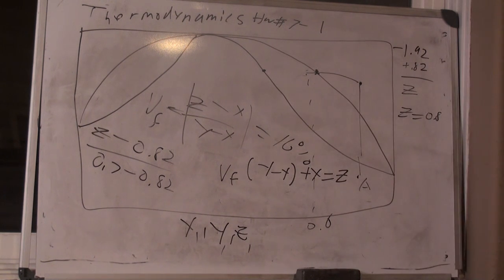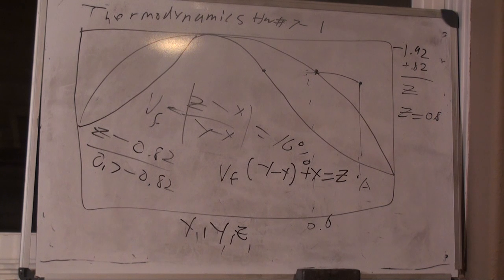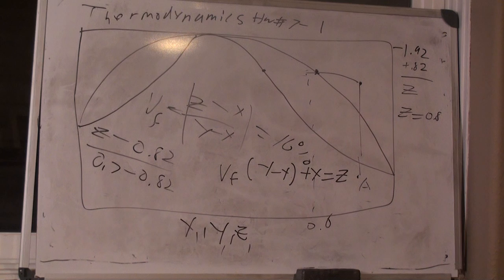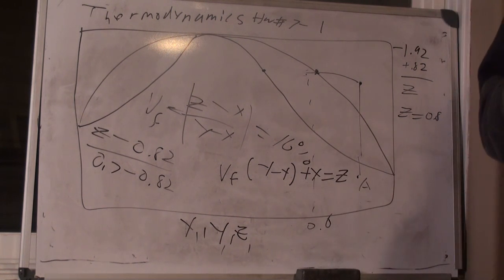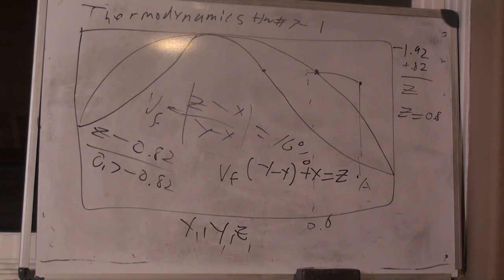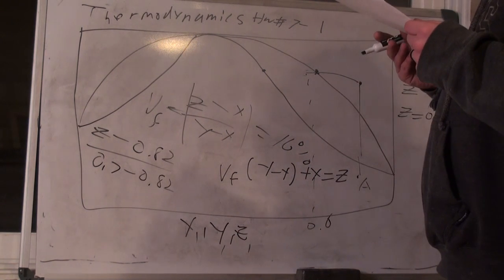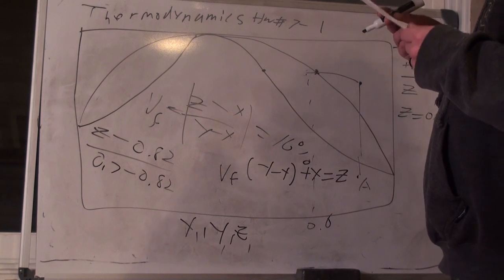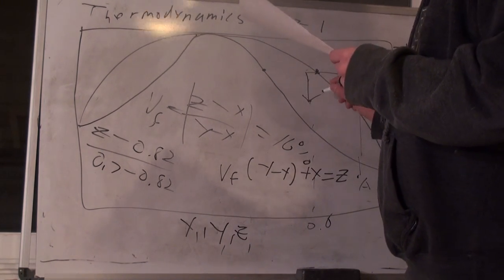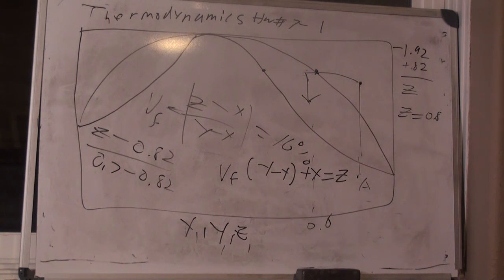The pressure then drops to 35 kPa after the mixing. Since this isn't path-dependent, I just move vertically down to 35 kPa, and z stays at 0.80. That still makes sense — the composition hasn't changed, only the pressure.